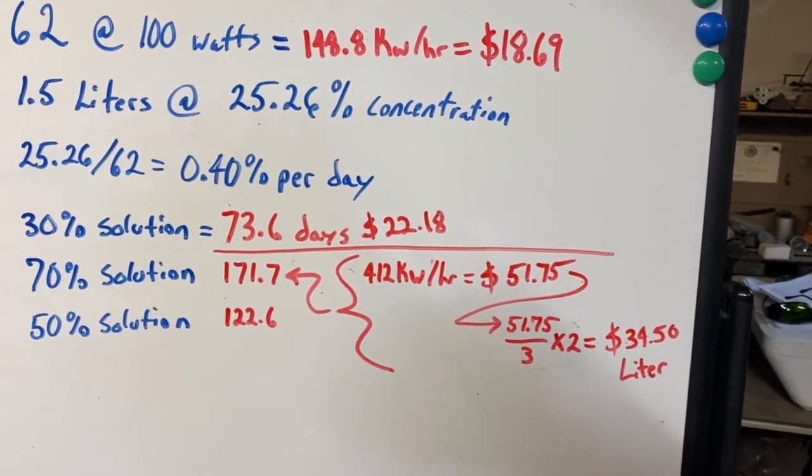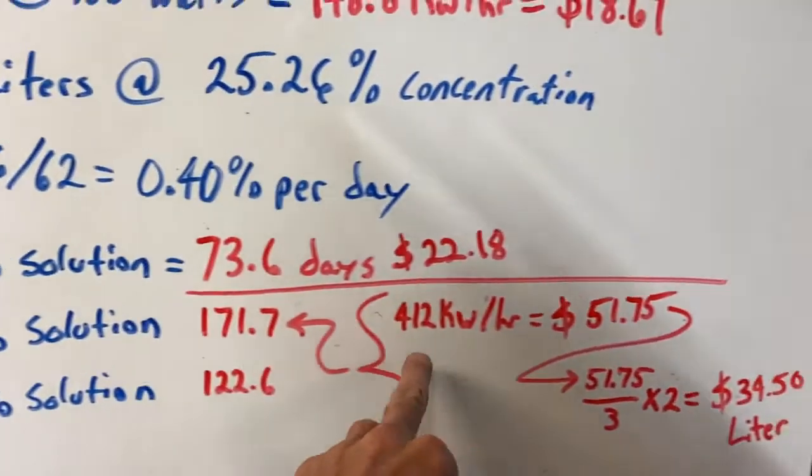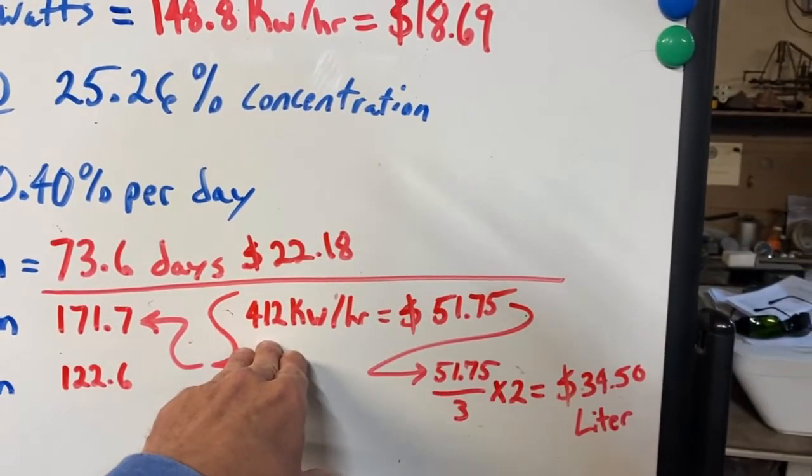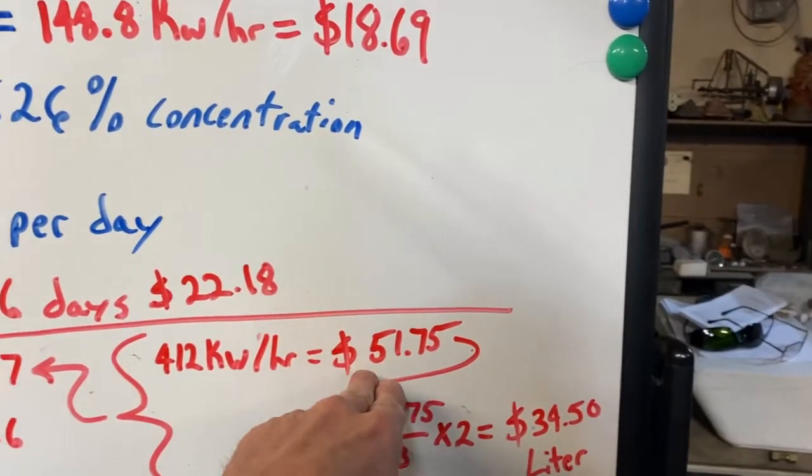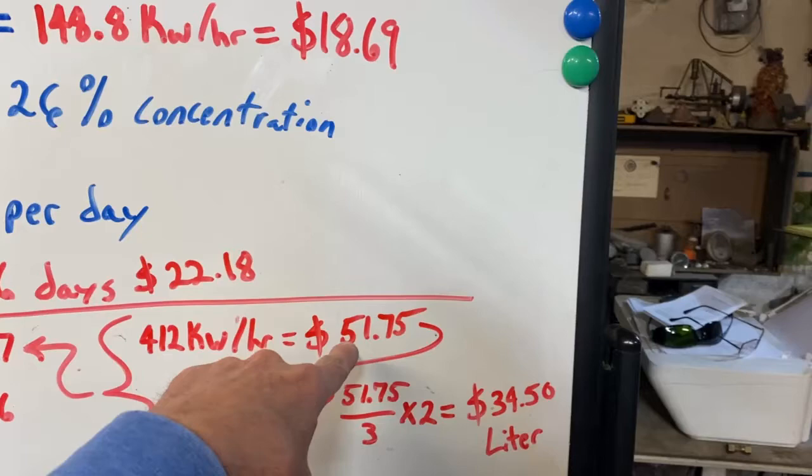Now, to beat the store-bought stuff at a 70% solution, it'd take us 412 kilowatt hours. Okay, that costs 51 bucks. But because we're making 1.5 liters at a time and not just 1 liter,